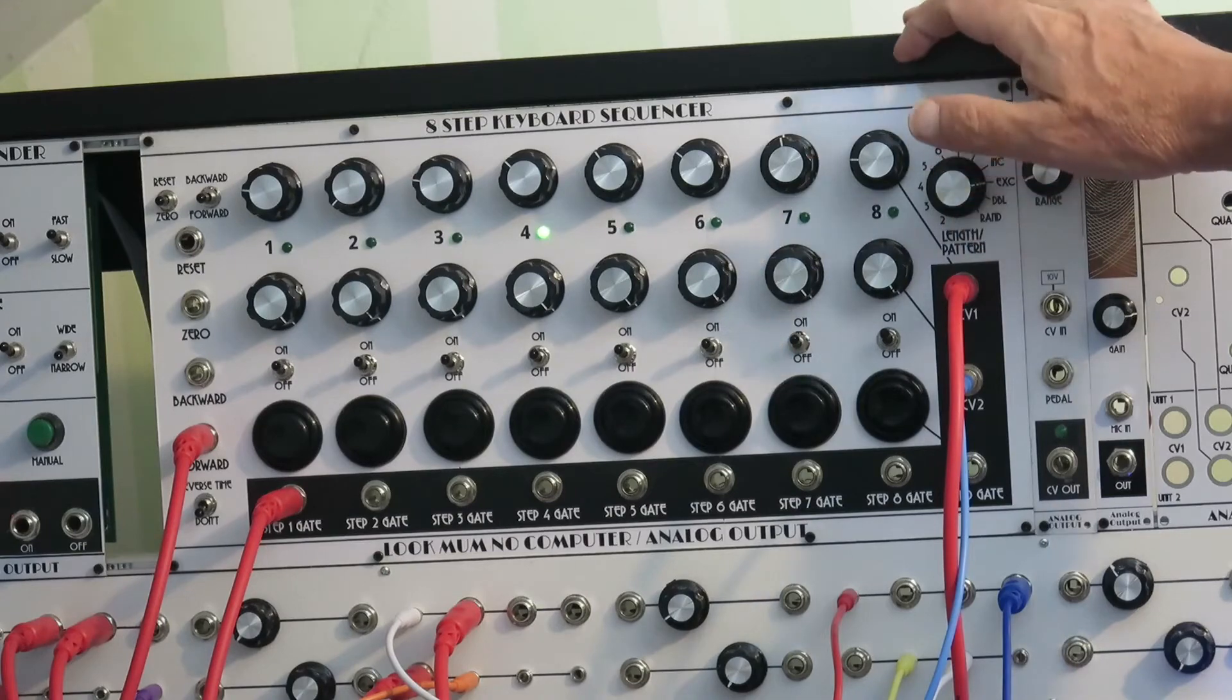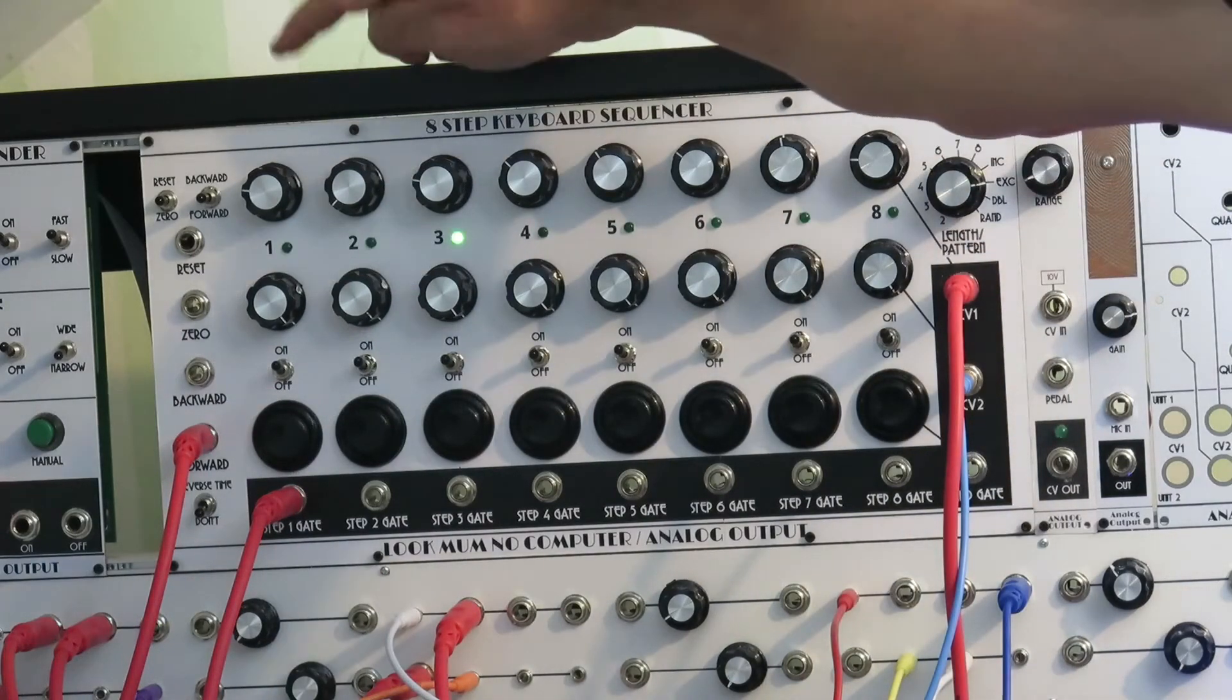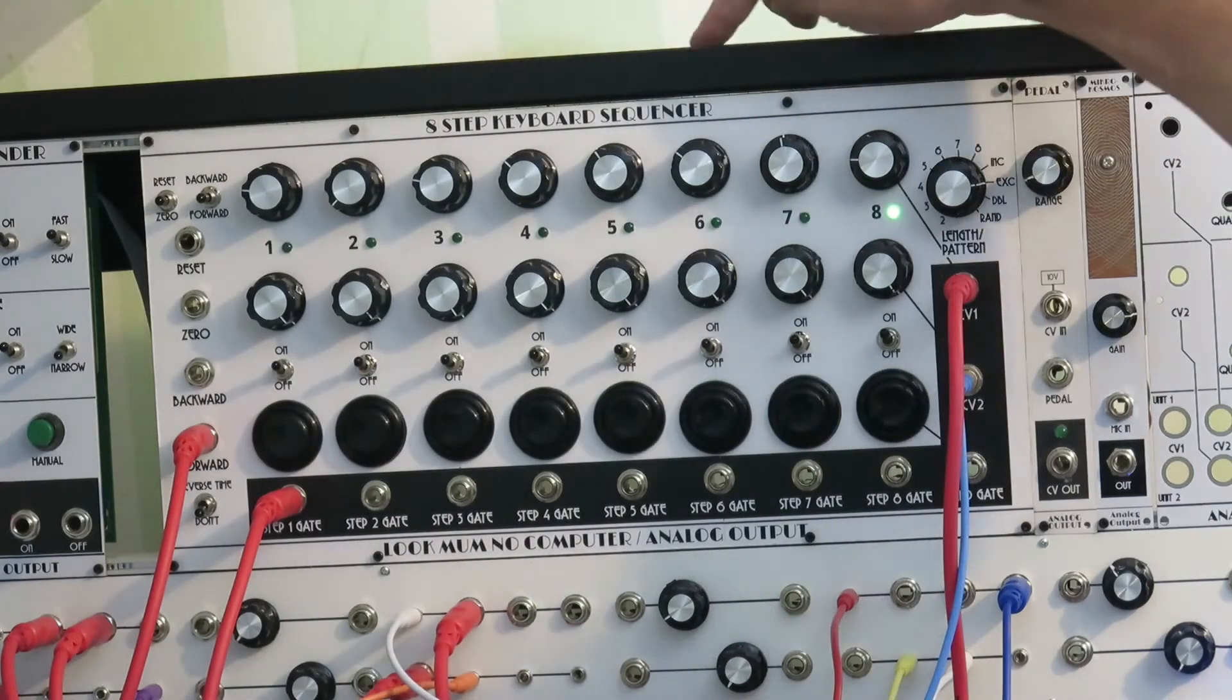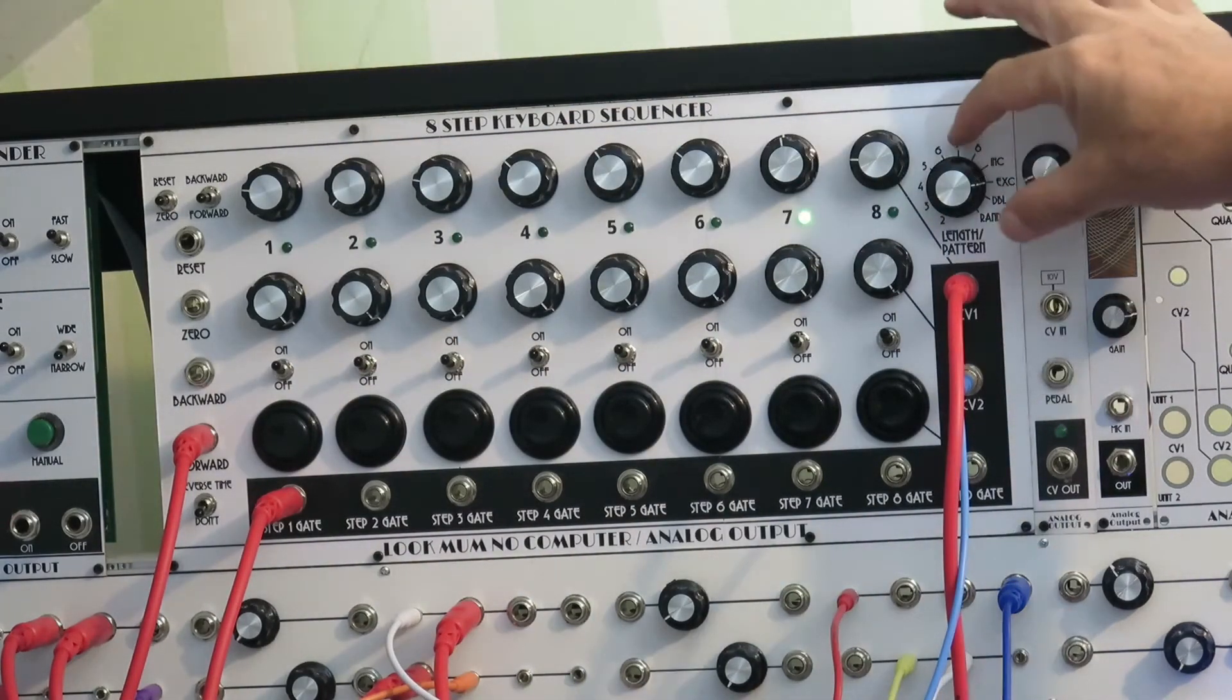Then there's the exclusive, which is similar, but it gives you one through eight, seven back down to two, then repeating. It doesn't repeat the one and the eight at the two ends.